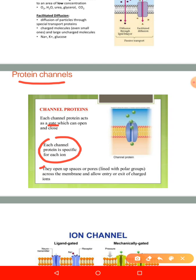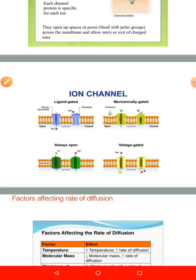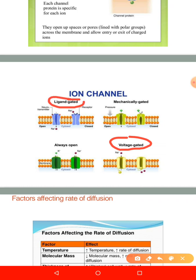Protein channels are integral proteins. Ion channels allow substances to pass through and can open or close. They are controlled by three things: voltage — voltage-gated ion channels — ligand, which includes hormones and neurotransmitters, and mechanical means — they open when pressure or trauma is applied. A good example of mechanically gated channels are the Pacinian corpuscles, the pressure receptors on our skin, and the hair cells.